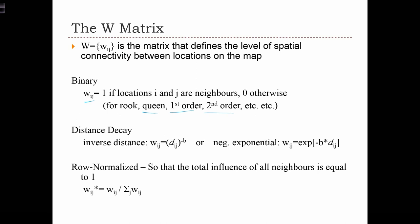But W doesn't have to be a 0, 1 matrix. It's often the case that we want to have a more nuanced definition of how neighborly two points are. And one of the ways that we can do that is by applying a distance decay function.